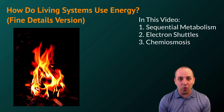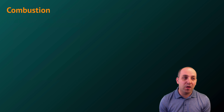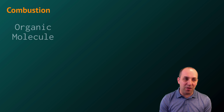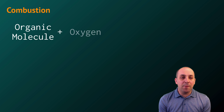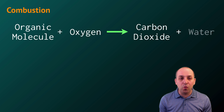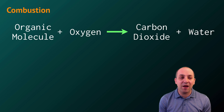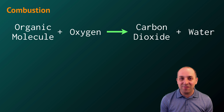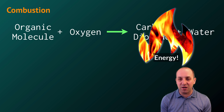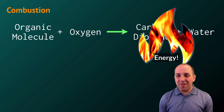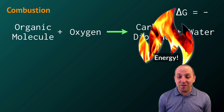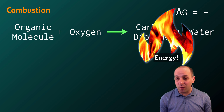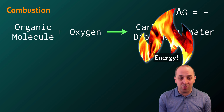Let's start by talking about fire. Fire is an example of combustion. In a combustion reaction, we take organic molecules and combine them with oxygen to produce carbon dioxide and water. The organic molecule is oxidized, and the release of energy from that oxidation is generally visualized as fire. This is an exergonic process and is what happens whenever a house or a dumpster burns down.